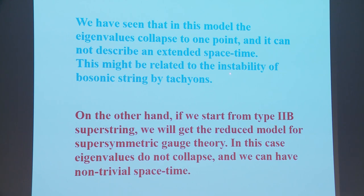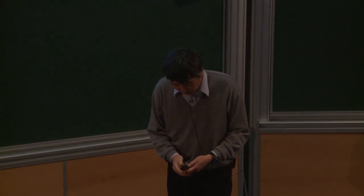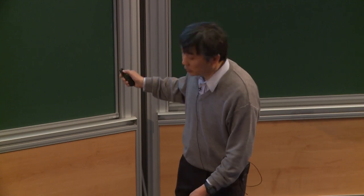We have seen that in this bosonic reduced model, the eigenvalues collapse to one point and it cannot describe an extended space-time. This might be related to the instability of the bosonic string. On the other hand, if we start from the type 2B superstring, we get the reduced model for supersymmetric gauge theory, and in this case eigenvalues do not collapse and we can have non-trivial space-time. Up to now, the dimension D was not special — nothing was special about D=26.